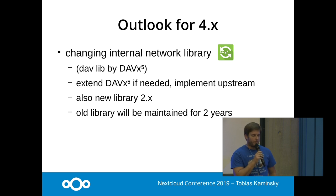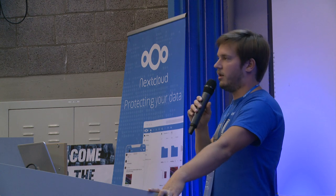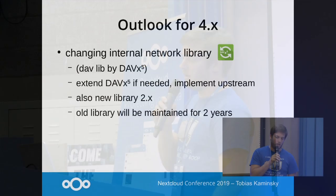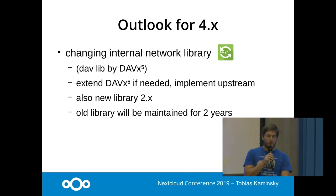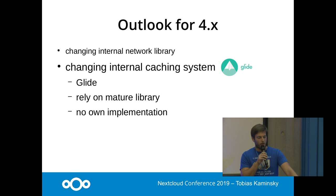For the 4.x version, we want to change the internal network library — it's rather old — and use the DAFT library by DAFT X5. We also want to exchange the new Android library called 2.x and maintain our old library for two years so people have enough time to switch. We also want to change the internal caching system from a self-made implementation to Glide, which is a major, well-adopted library.